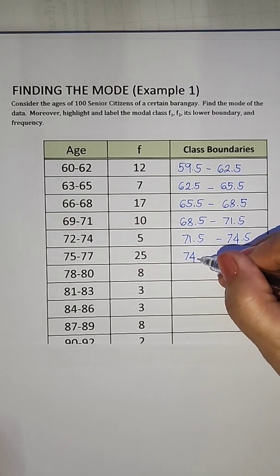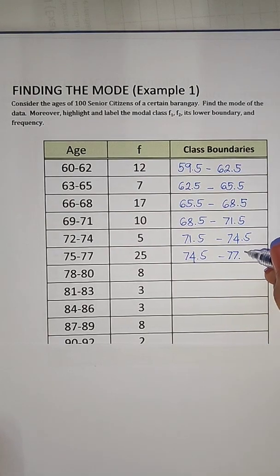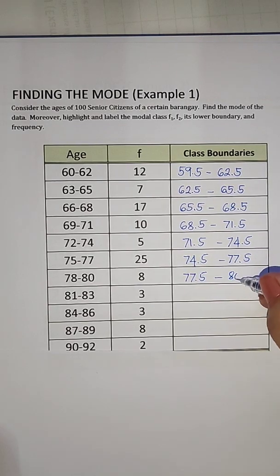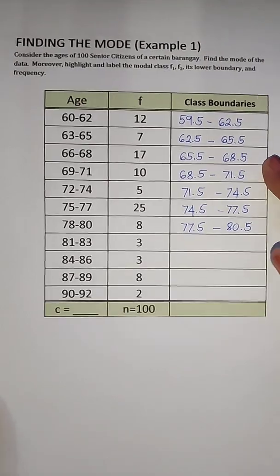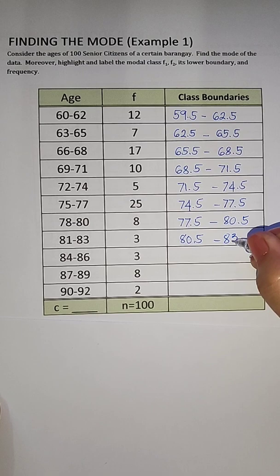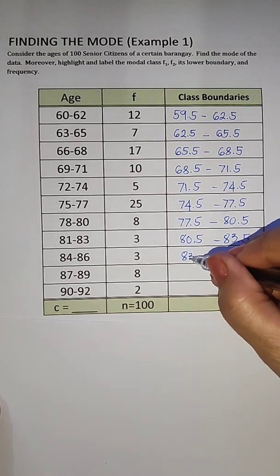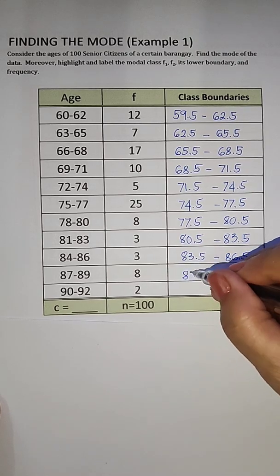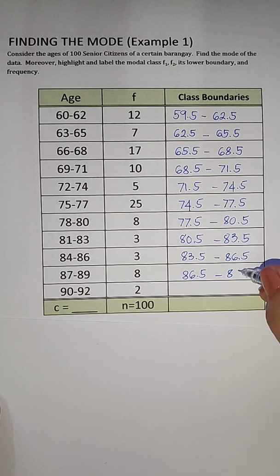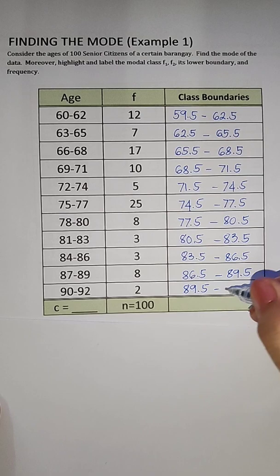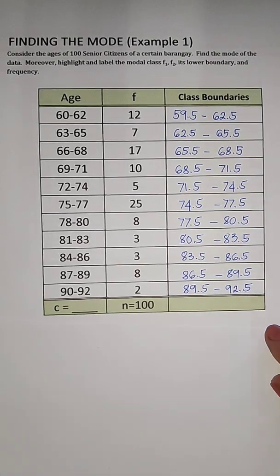77.5 to 80.5, then we have 80.5 to 83.5, 83.5 to 86.5, 86.5 to 89.5, and then lastly we have 89.5 to 92.5. So having completed the table, we are now going to find the modal class.